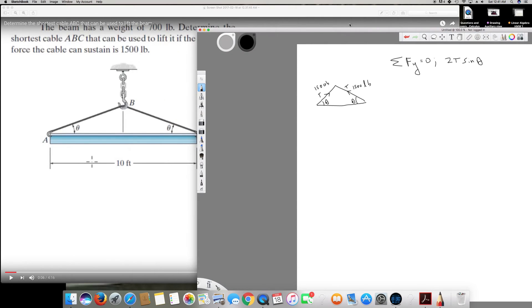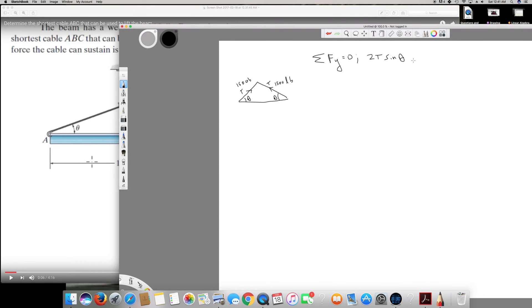So 2 times 1500 sin(θ) - I can solve this - 700... I can find theta. Theta is going to be sin⁻¹(700/3000).